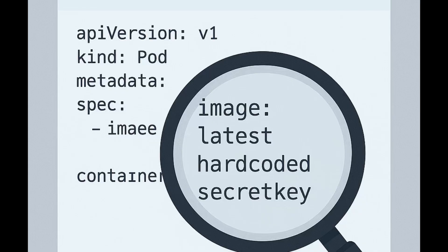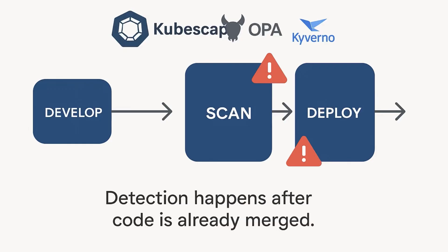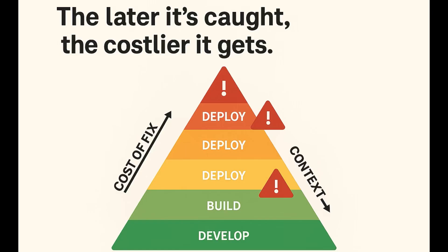There are existing solutions that help identify these issues — tools like Kubescape, Open Policy Agent, Kyverno, and many more. They do a great job analyzing manifests, enforcing policies, and scanning workloads. But here's the problem: they usually operate after the fact — after you've written the code, after you've pushed the changes, after it's already merged into your pipeline. By that time, the feedback loop is slow, the context is gone, and the cost of fixing those mistakes has already gone up.